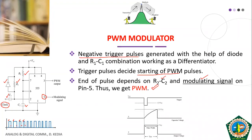The two internal comparator voltages are 1/3 VCC, corresponding to the trigger pulse, and 2/3 VCC, corresponding to the control voltage. The pulse width is generated for the duration the capacitor charges up to the threshold voltage of 2/3 VCC, in combination with the modulating signal. This completes the review of pulse width modulation from the previous class.